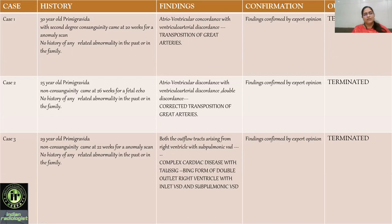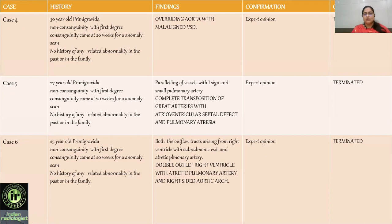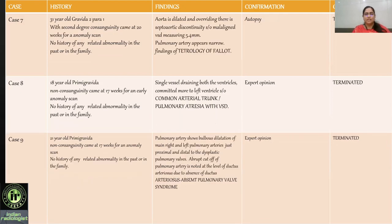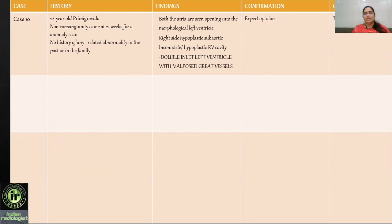The summary table shows findings and outcomes for each case. Case 1: TGA confirmed by expert opinion, terminated. Case 2: corrected TGA confirmed by expert opinion, terminated. Case 3: complex DORV — Taussig-Bing form with inlet VSD and sub-pulmonic VSD, confirmed by expert opinion. Case 4: overriding aorta with malaligned VSD, terminated. Case 5: complete TGA with AVSD, terminated. Case 6: DORV with atretic pulmonary artery and right-sided aortic arch, terminated. Case 7: tetralogy of Fallot, terminated with autopsy confirmation. Case 8: common arterial trunk with VSD, terminated. Case 9: absent pulmonary valve, terminated. Case 10: DILV, terminated.